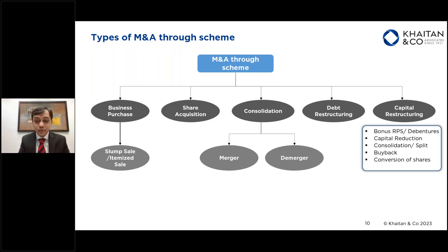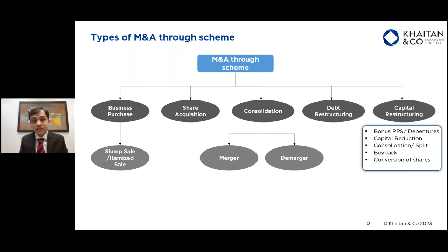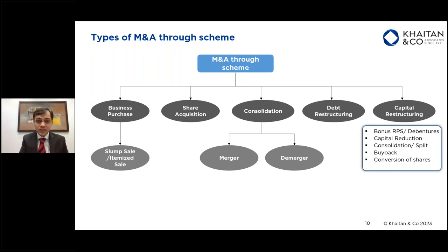There is a circular under foreign exchange regulations which says that if a company has to issue bonus preference shares or bonus debentures to a non-resident shareholder, it can only be done through a scheme of arrangement. Another example: if there are two JV partners in a company and one partner wants to exit and utilize the surplus funds available in the company, one can do a scheme by which you cancel or purchase the shares held by the partner who wants to exit, and discharge the consideration using the surplus funds available in the company.